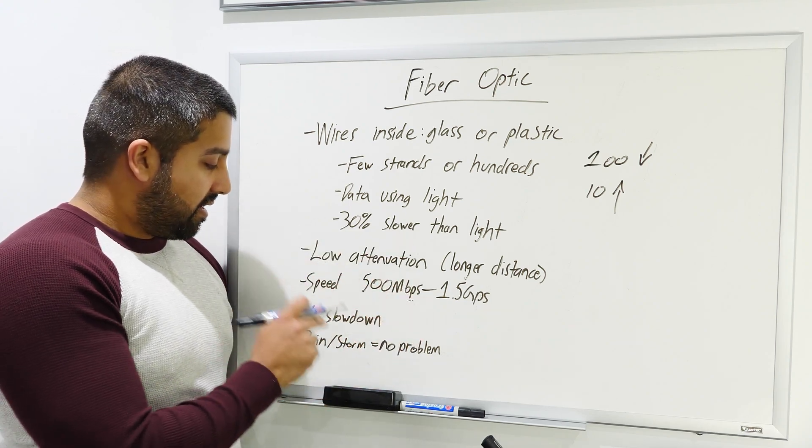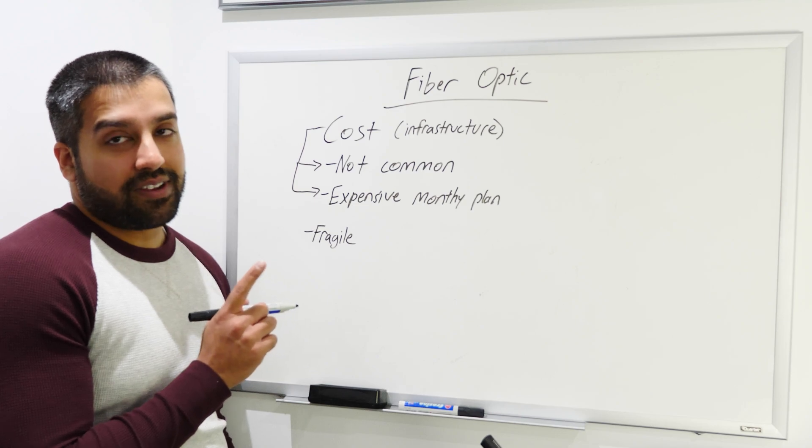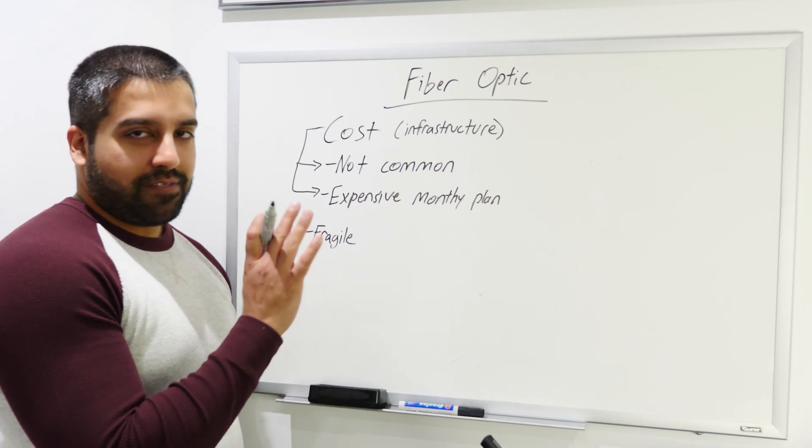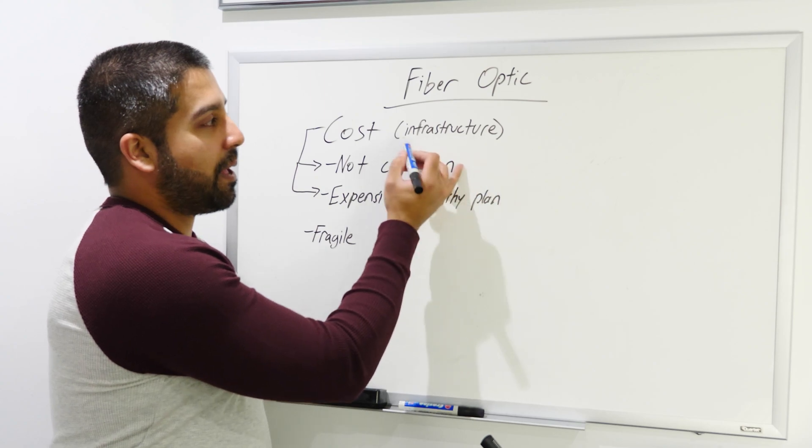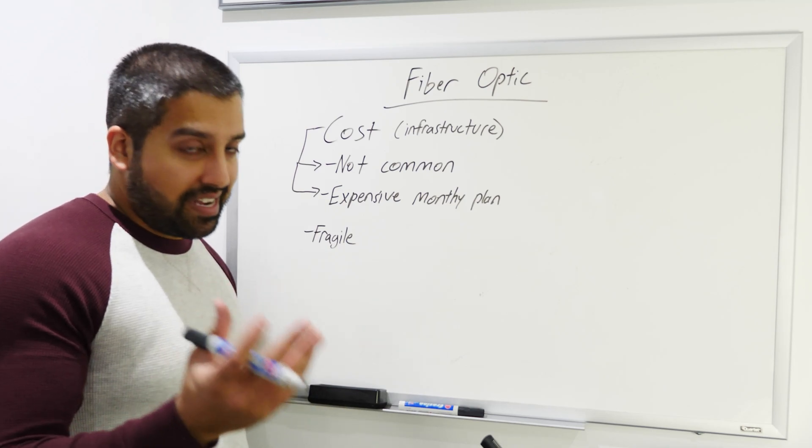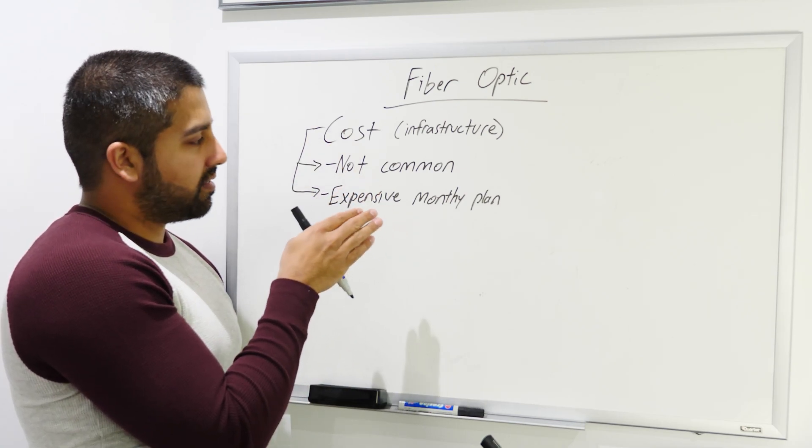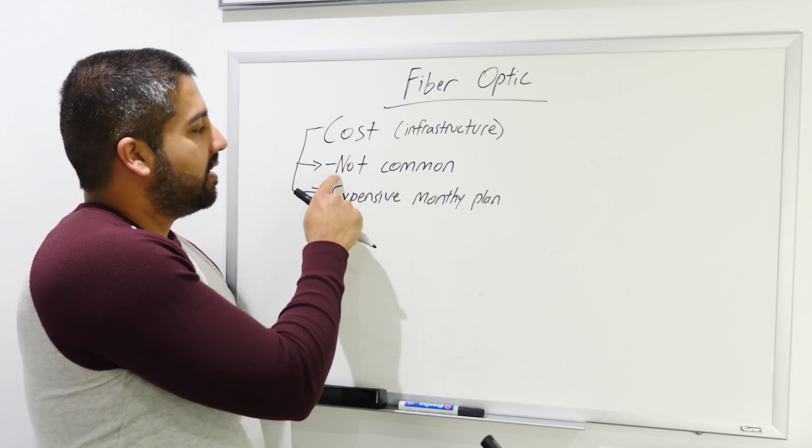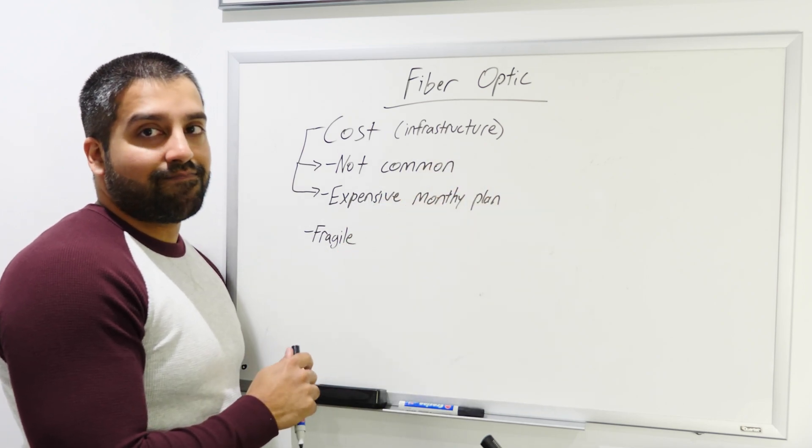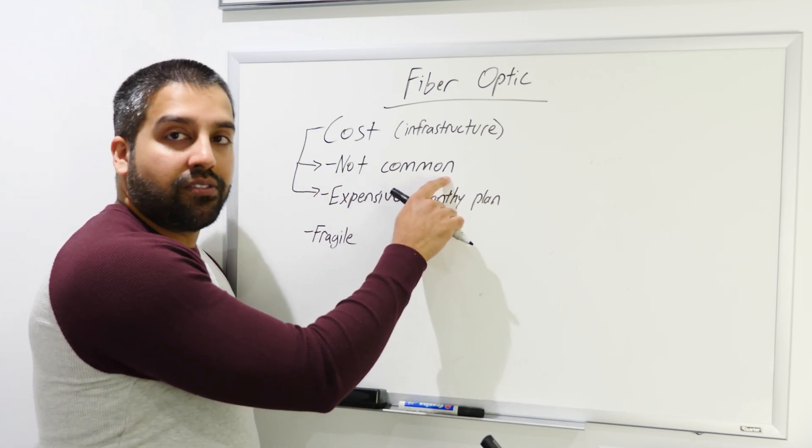There's no slowdown of any kind like cable internet. The speed is always consistent no matter how many people in your neighborhood are using fiber optic. It's not susceptible to rains and storms like DSL internet. Fiber optic does have its own caveats. The first, of course, is cost of the infrastructure. Phone lines and cable coaxial cables have been there for decades, so the cost of the infrastructure is the big problem here. It's not common because the infrastructure is not there. In my neighborhood for example, you can't get fiber optic. It doesn't exist because no one wants to invest in bringing it to my neighborhood yet.